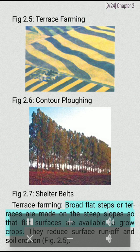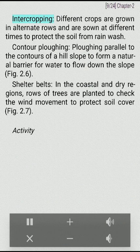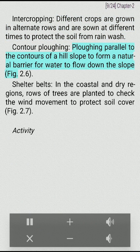Terrace farming: broad flat steps or terraces are made on the steep slopes so that flat surfaces are available to grow crops. They reduce surface runoff and soil erosion. Intercropping: different crops are grown in alternate rows and are sown at different times to protect the soil from rainwash. Contour plowing: plowing parallel to the contours of a hill slope to form a natural barrier for water to flow down the slope.